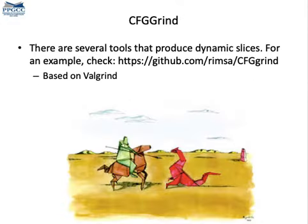There are several tools that can be used to compute dynamic slices. If you are curious about some of them, I recommend CFG-Greened. It builds a dynamic view of the program's CFG by analyzing the execution of that program using Bell-Greened.